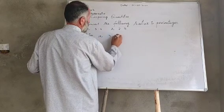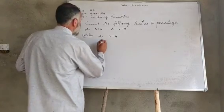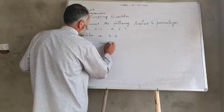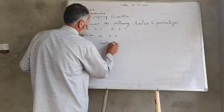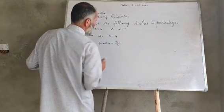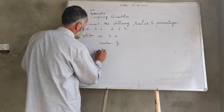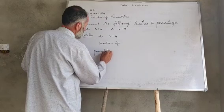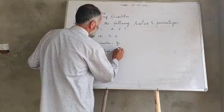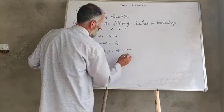For the first part, we need to convert 3/4 into a percentage. So we take 3 divided by 4, and then multiply by 100 to get our percentage.